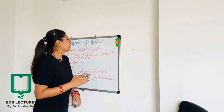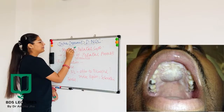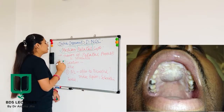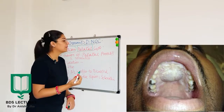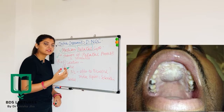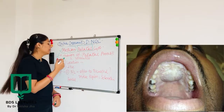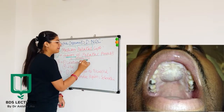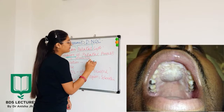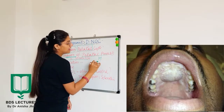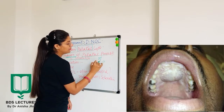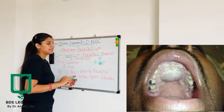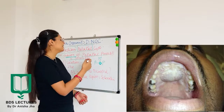The next cyst we are going to cover is the median palatal cyst. 'Median' means somewhere in the midline and 'palatal' means it is in the palate. Regarding etiology, it is a fissural cyst that forms by epithelial entrapment along the line of fusion of the palatal process and the maxilla. When the maxilla and palatal process fuse, epithelial cells are entrapped and give rise to the median palatal cyst.